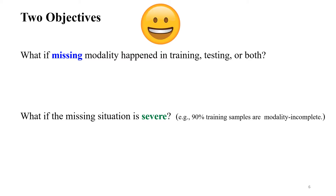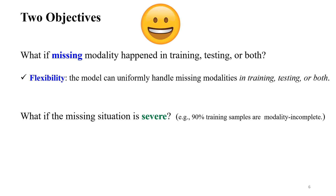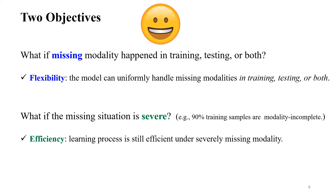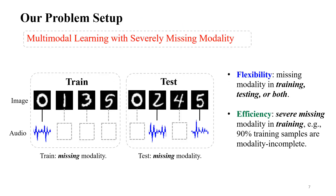These two questions point out two properties we have to consider. The first one is flexibility — the model should be able to uniformly handle missing modality in training, testing, or both. The second one is efficiency — the learning process of the model should be efficient even under severe missing modality. We name our problem multimodal learning with severe missing modality, and we tackle it with two objectives: efficiency and flexibility.